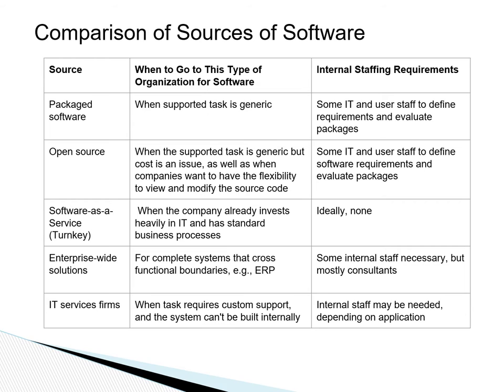For example, if an organization is looking for word processing, which is a generic task in any organization, we need the internal IT and user staff to define the requirements if there are any particular ones. For many years at US courts, they used WordPerfect instead of Word because at the time WordPerfect had the features required for legal documents, making it more attractive for US courts.